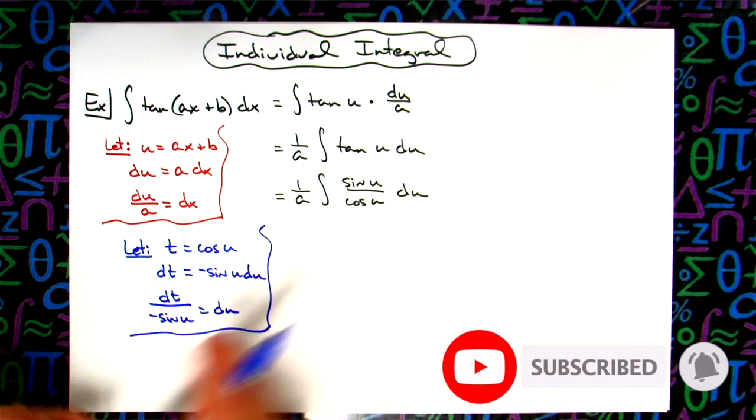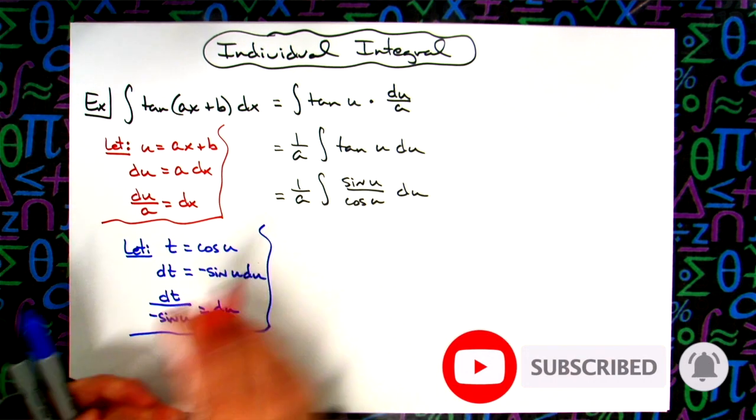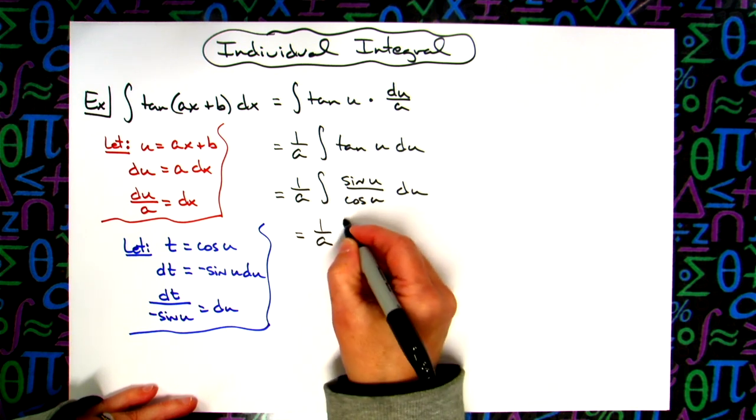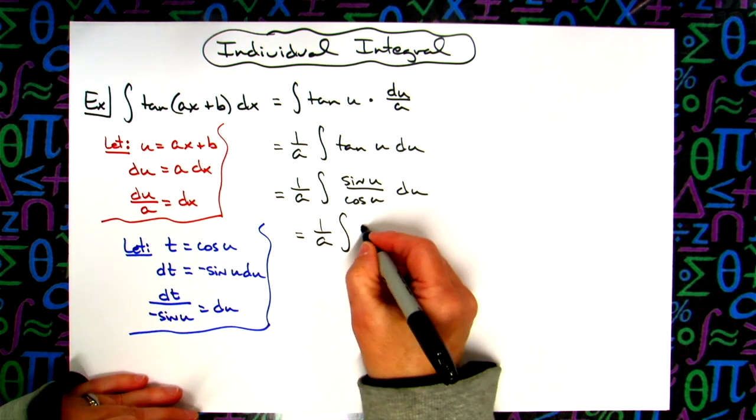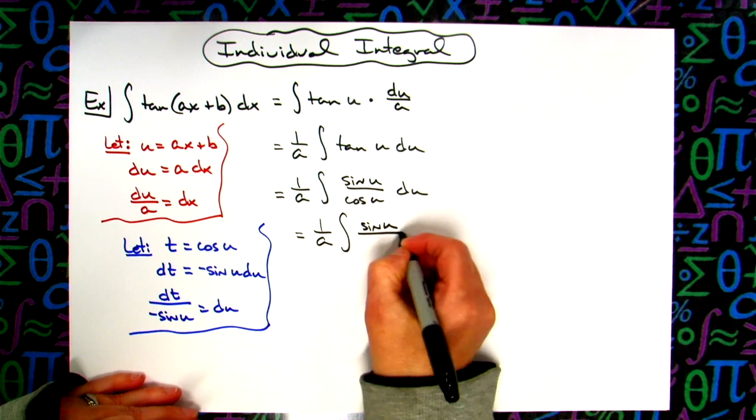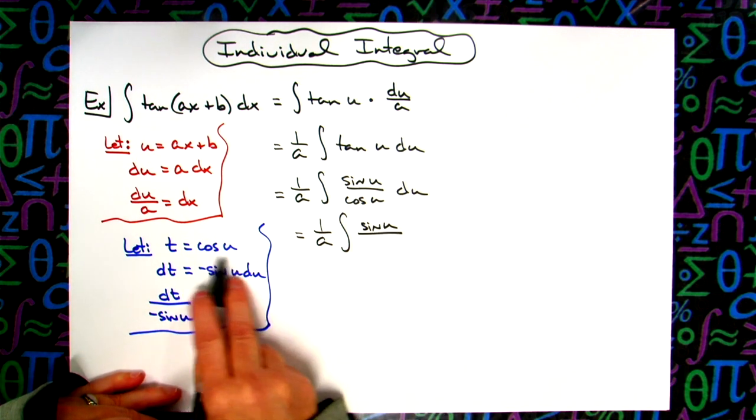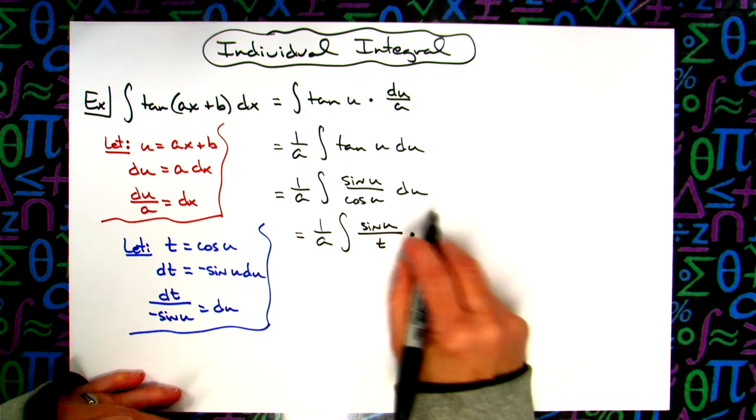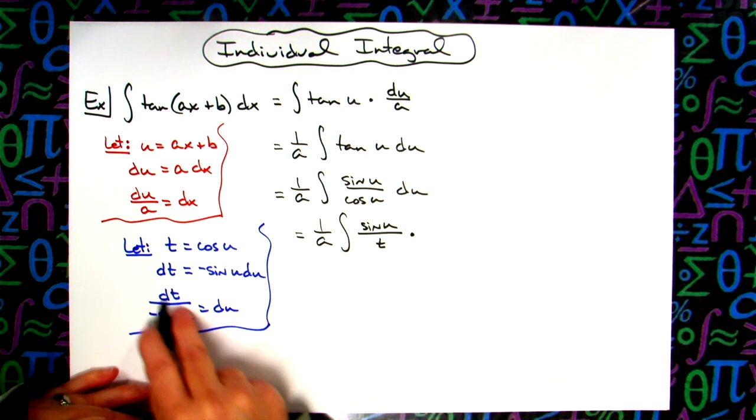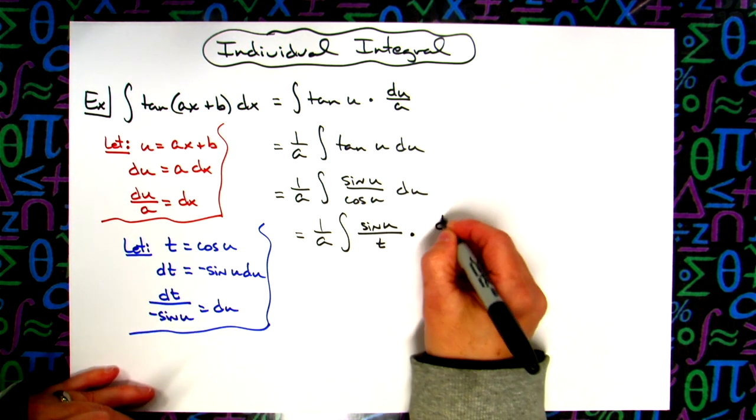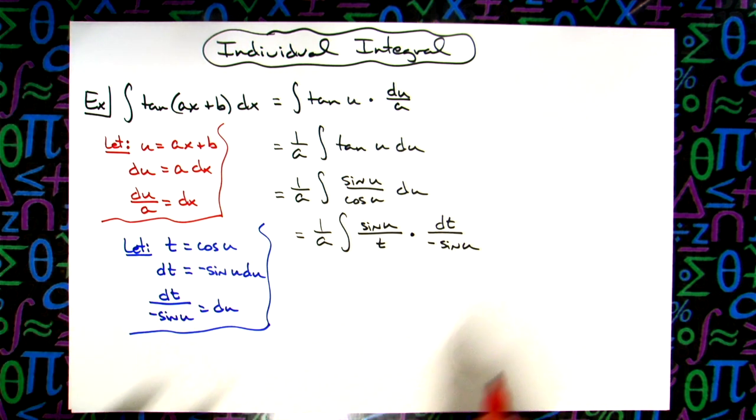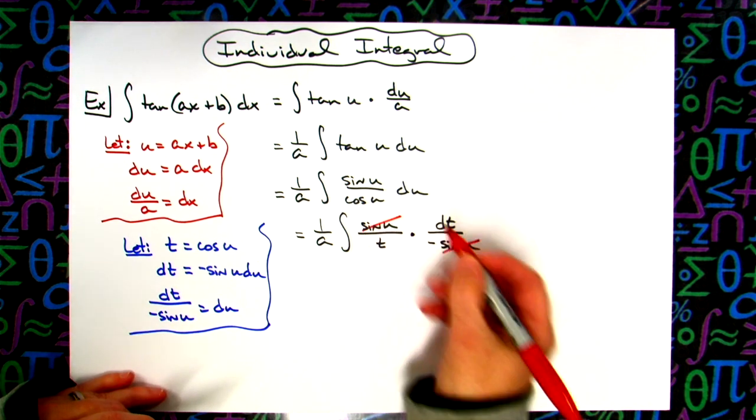Now I'm going to come back and do some substitutions. I'll still have my 1 over a out in front. I'll have sine u on top. I'm going to replace cosine u with t, so I'll have t on the bottom. I'm going to replace du with dt over negative sine u. That's going to let the sine u's cancel out.